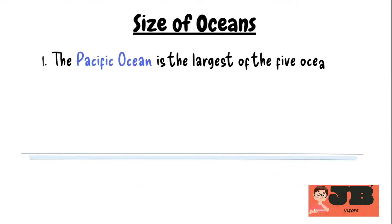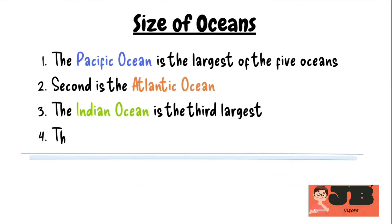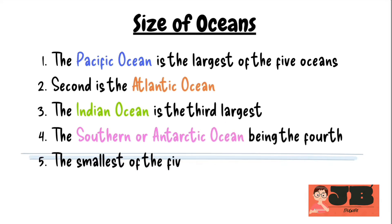The Pacific Ocean is the largest of the five oceans, followed by the Atlantic Ocean. The Indian Ocean is the third largest, with the Southern Ocean being the fourth in size. The smallest of the five oceans is the Arctic Ocean.